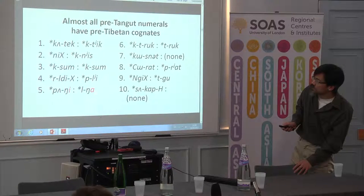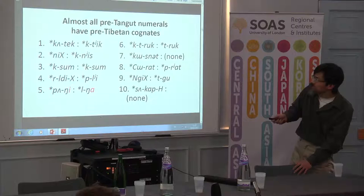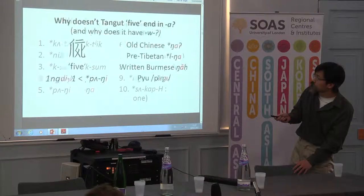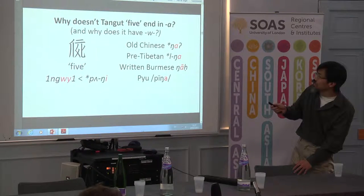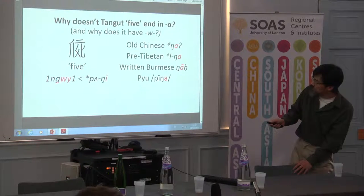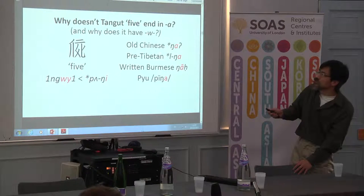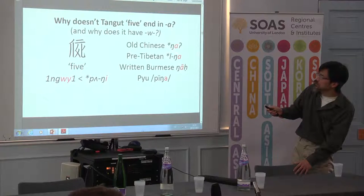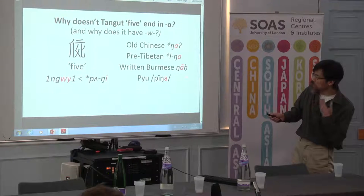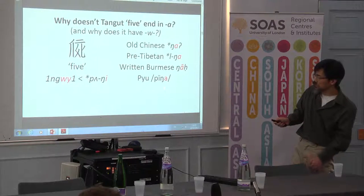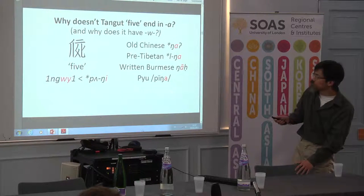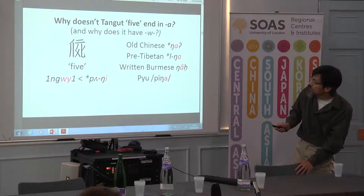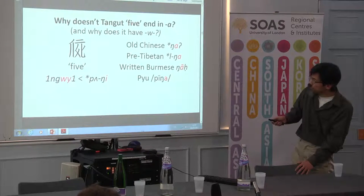Even if you go back in time, you still end up with very different vowels — an e and an ah — and how can this be reconciled? Assuming these are really cognates, and I'm pretty sure they are: why does the Tangut five end in ah, and why does it have a medial W? Using my system, if I take this back in time, I end up with an e. But throughout Sino-Tibetan, the word for five in the oldest languages — Old Chinese, Tibetan, Burmese, and Pyu — universally has ah. So we have all these votes for ah, and Tangut has e here. What's going on?